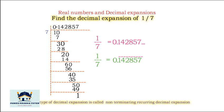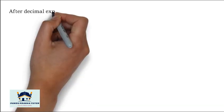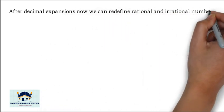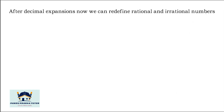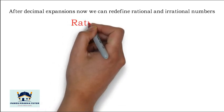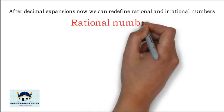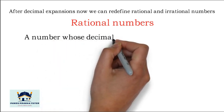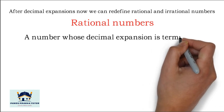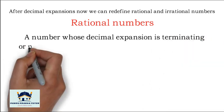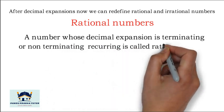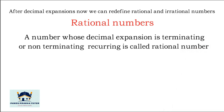After seeing all these three examples, we can redefine rational and irrational numbers. A rational number is a number whose decimal expansion is terminating or non-terminating recurring. This is a very important point.